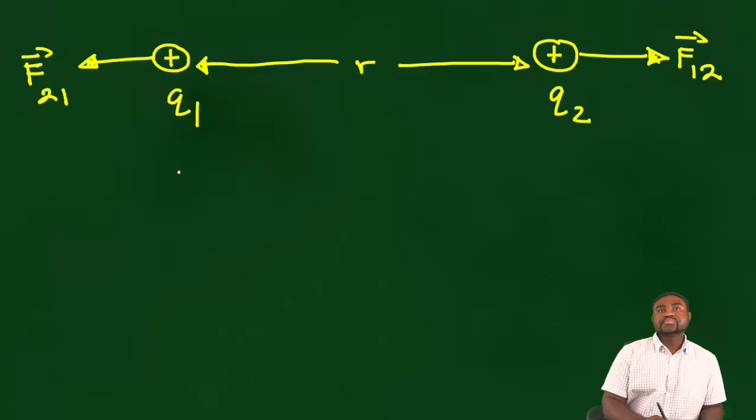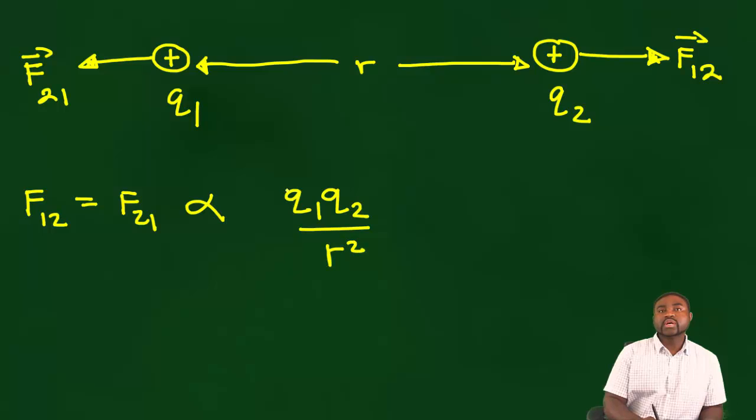Coulomb experimentally determined that F12, which is the same as F21, was proportional to the magnitude of the product between the charges and inversely proportional to the square of the distance separating them.